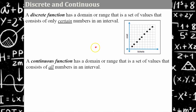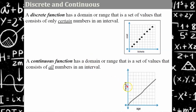A continuous function has a domain or range with all numbers in an interval. Consider your age and your height: this is continuous because at one year and four months you have a height, at two years and one month you have a height — you're continually growing. There's not a point in your age where you don't have height, so this is continuous.